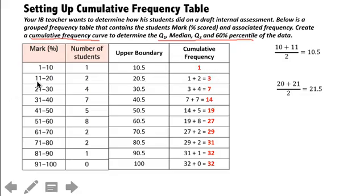Now for 11% through 20%, there's 2 students. So that means 3 total students scored between 1% and 20%. So I do 1 plus 2, and I get my 3. Now 4 students scored between a 21% and a 30%. So now I'm going to add that 4 to my previous cumulative frequency, 3. So it's 7. So now I have 7 total students that scored between a 1 and a 30. I keep doing this process until I get to the end.